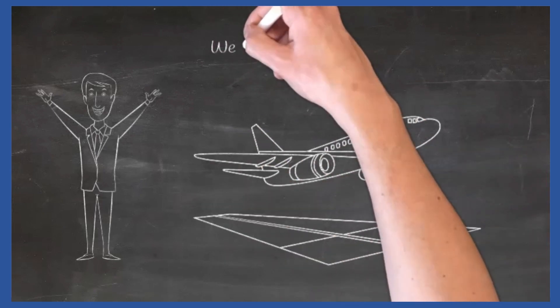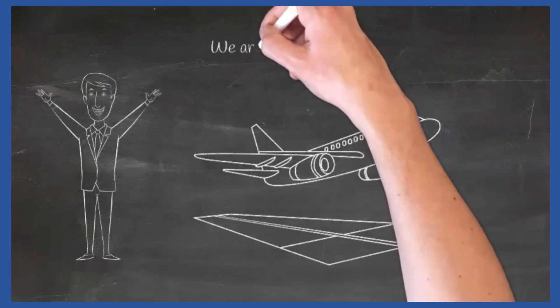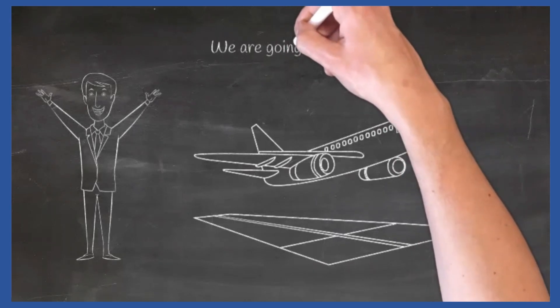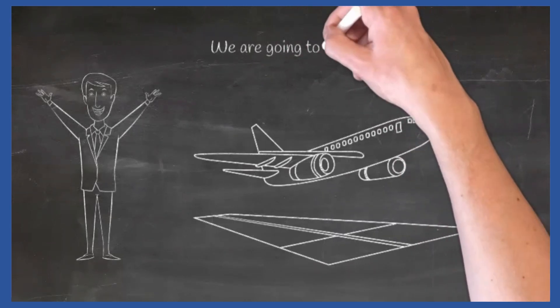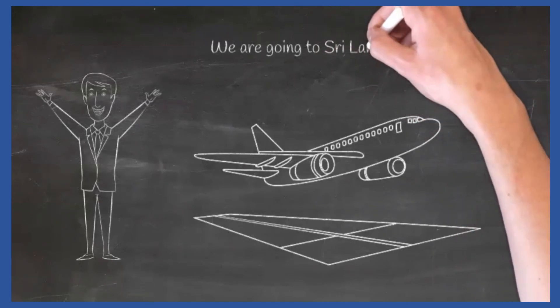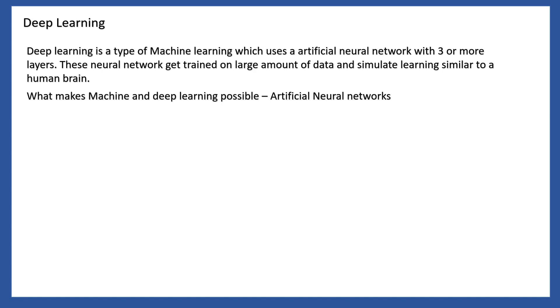Once the computer model is ready, you can start providing your own inputs and it will produce outputs. Now let's talk about deep learning. Deep learning is a form of machine learning, but in deep learning the neural network has multiple layers available.